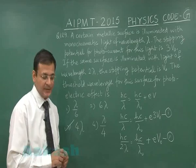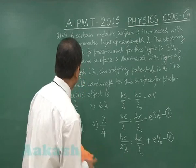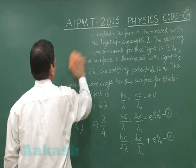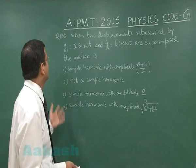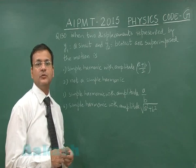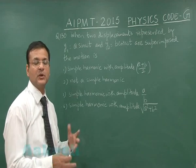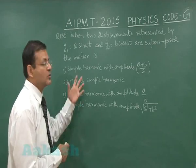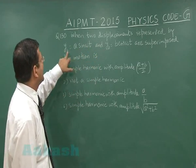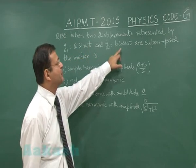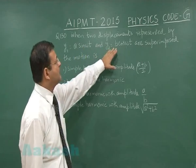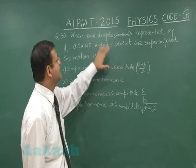Now let us move to question number 130. This is based on the addition of two different simple harmonic motions — you can use vector expressions or the phasor method. It says that two displacements y1 equals a·sin(ωt) and y2 equals b·cos(ωt) are superimposed. Both are SHM with the same frequency.